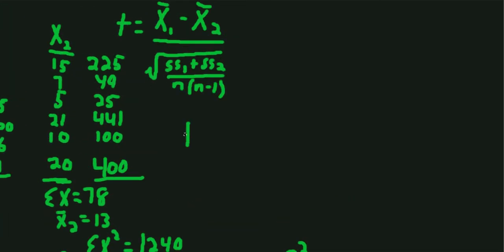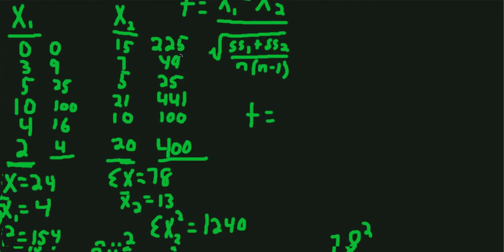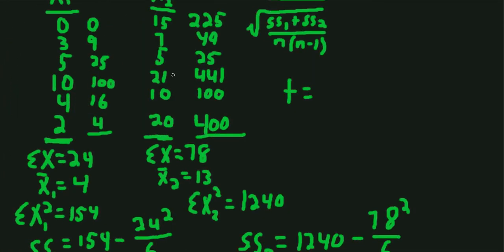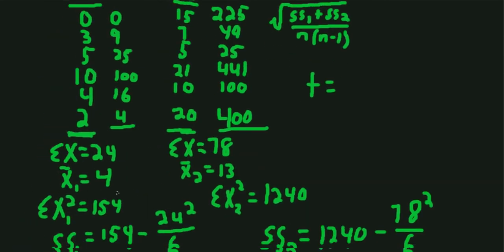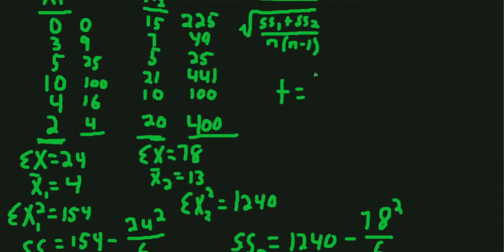In the numerator, I guess we'll subtract the larger from the smaller since the way the formula is set up, but it wouldn't matter if we did it the other way around. We'll take the mean 4 and subtract the mean from the other group, which is 13. So we'll get negative 9 in the numerator.